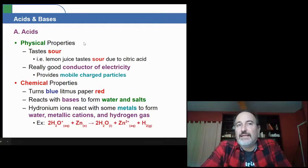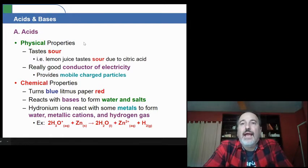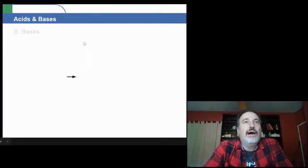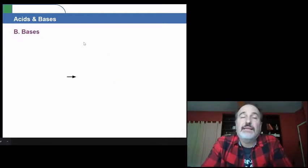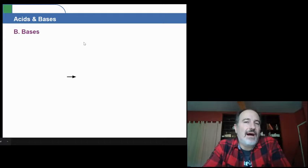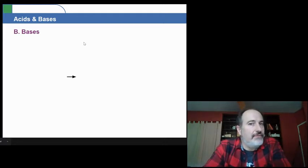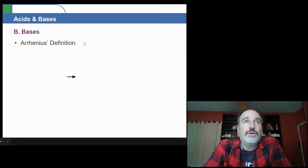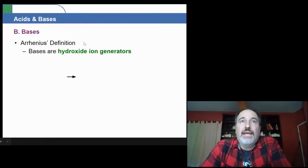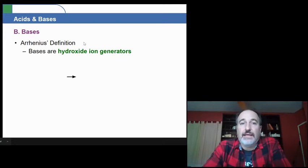For example, if you take zinc and mix it, zinc will also be eaten away in this reaction that you see here. Now, bases. Bases are kind of the opposite of acids, but they're also very reactive. Now, according to Arrhenius, a base is a hydroxide ion generator.